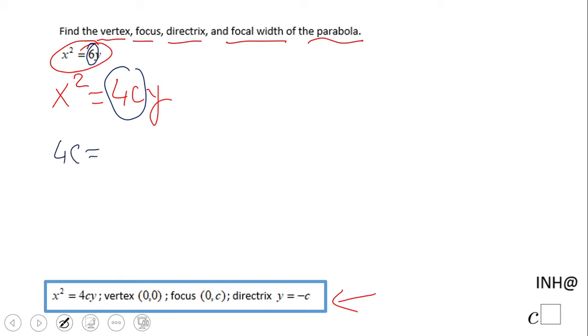4c needs to be 6. That will allow us to find c. Divide by 4: 6 over 4 simplified, we get 3 over 2.